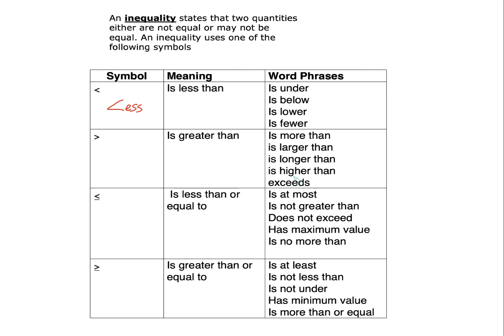I find that for less than and greater than, students are more proficient. However, for less than or equals and greater than or equals, this is where some students struggle. For less than or equals, the word phrases used are: at most — the most popular one on the test — is not greater than, does not exceed, has a maximum value, and is no more than. The popular ones for less than or equals are at most, maximum value, and is no more than.